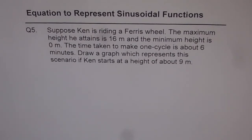Suppose Ken is riding a Ferris wheel. The maximum height he attains is 16 meters and the minimum height is 0 meters. The time taken to make one cycle is about 6 minutes. Draw a graph which represents this scenario if Ken starts at a height of about 9 meters.